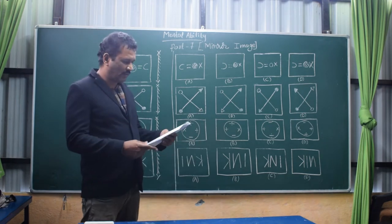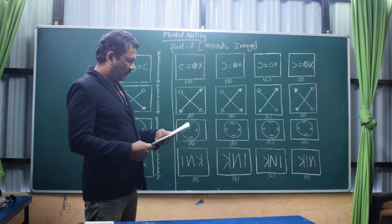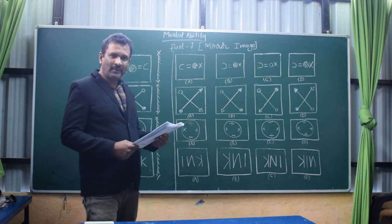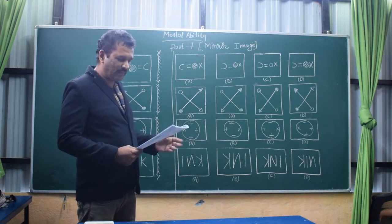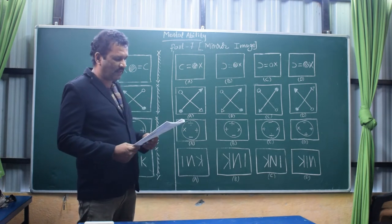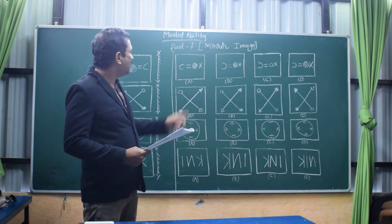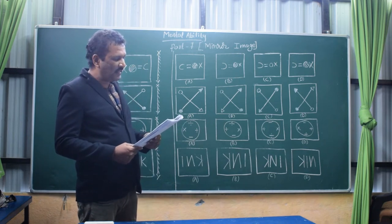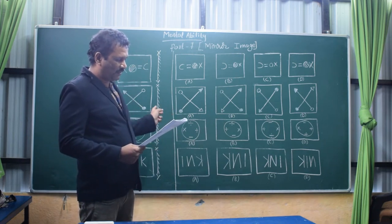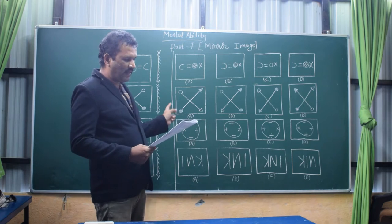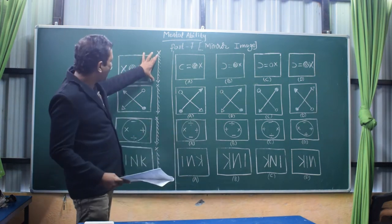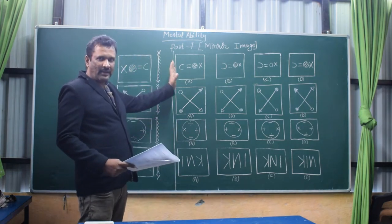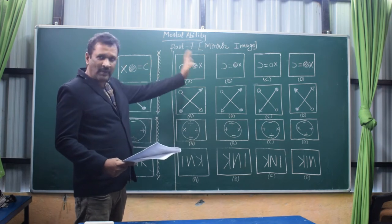I will read the question now. In the questions 1, 2, 3, 4, there is a question figure on the left side and as usual, 4 answer figures marked A, B, C, D all given on the right side. Select the answer figure which is exactly the mirror image of the question figure when the mirror is held on XY.